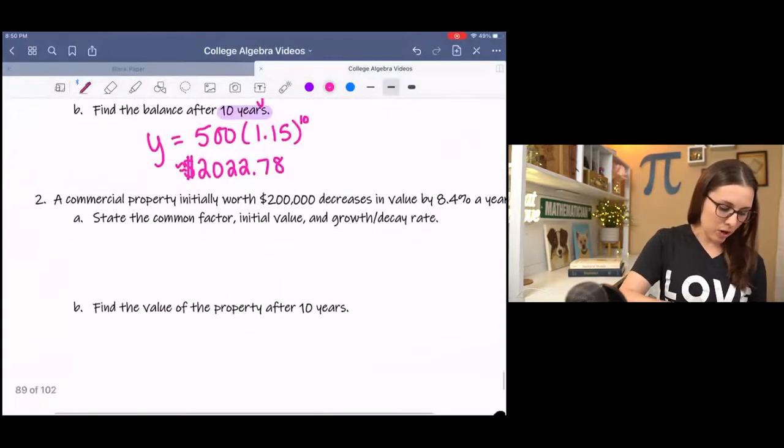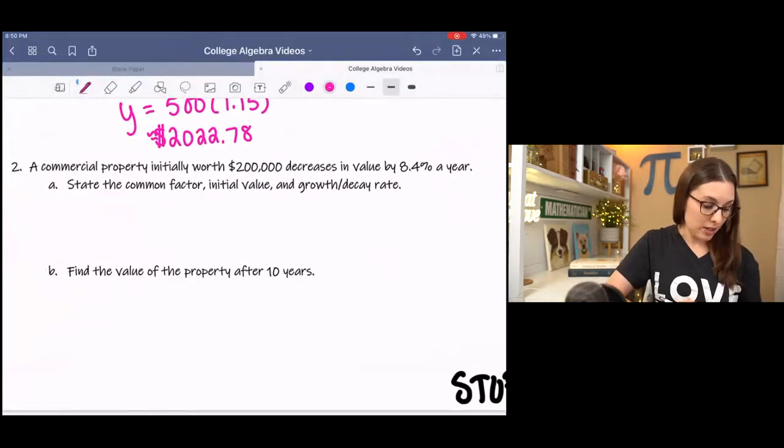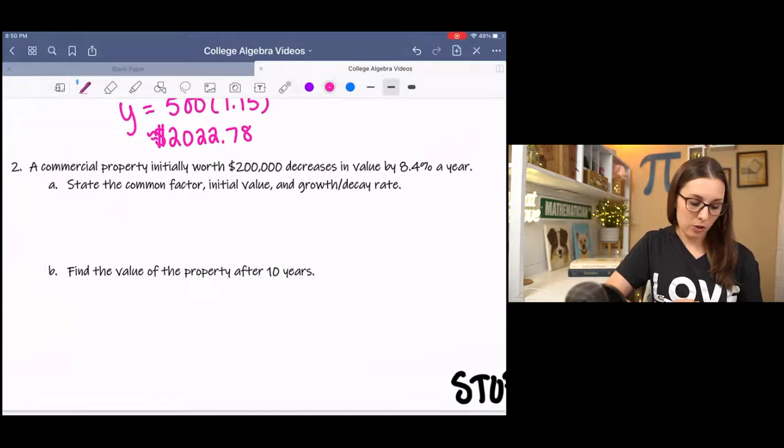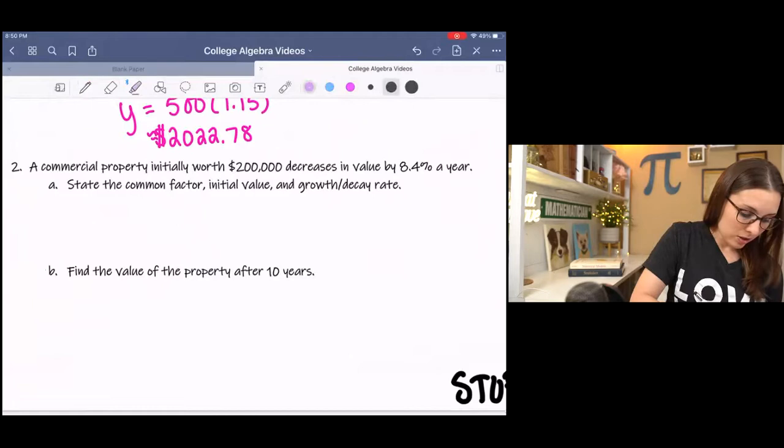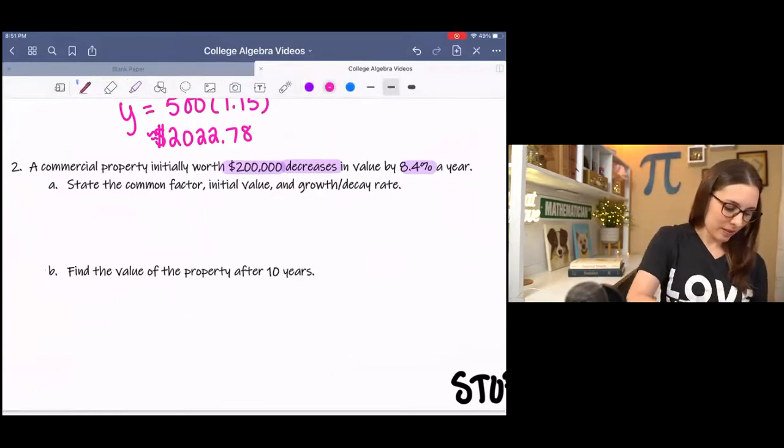Next example, a commercial property initially worth $200,000 decreases in value by 8.4% a year. That's not good. So decreases. And this was initial worth. So answer the next couple questions and see if you can get it.